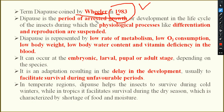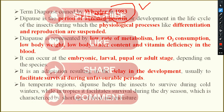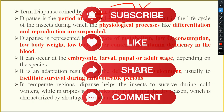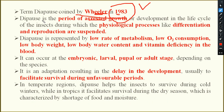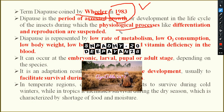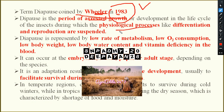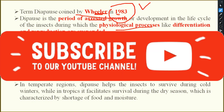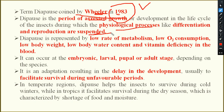Diapause is the period of arrested growth or development in the life cycle of the insect, during which the physiological processes — such as digestion, respiration, circulation, and excretion — are stopped. Differentiation and reproduction are also suspended. They will not be working for a shorter period of time.